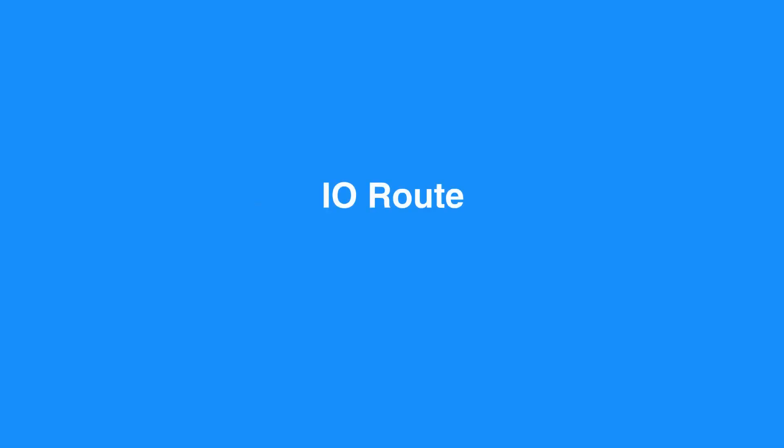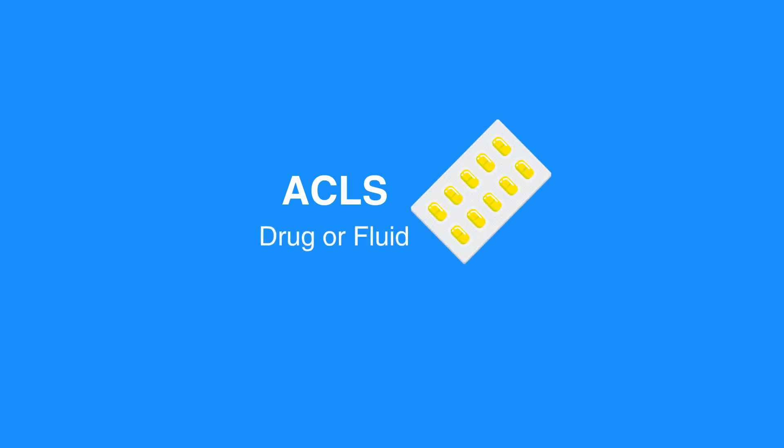High quality CPR helps circulate these drugs and is an important part of resuscitation. The IO route is used to deliver drugs and fluid safely and effectively during resuscitation when IV access is not available. IO access can be used for all age groups, can be placed in less than one minute, and has more predictable absorption than the ET route. Any ACLS drug or fluid that can be administered intravenously can also be given intraosseously.